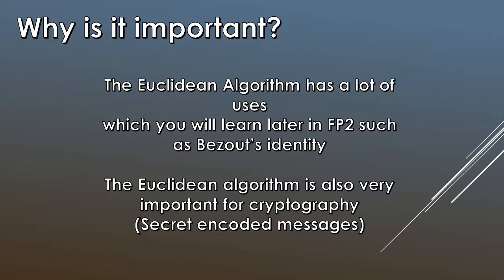And it is so important in just number theory overall. I can't think of anything, maybe Euler's totient function is probably a little bit more important, but it is really up there with some of the most important stuff.